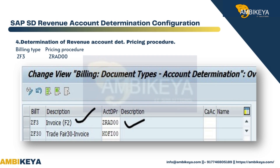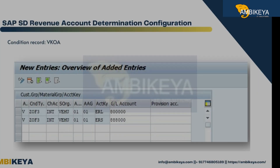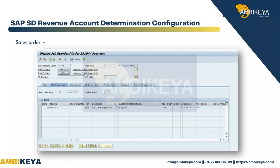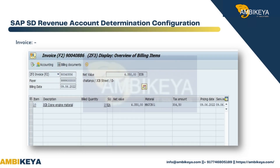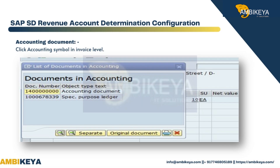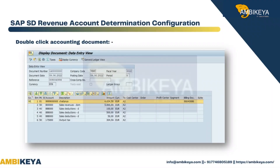Determination of revenue account determination pricing procedure: billing type ZF3 maps to pricing procedure ZRAD00. Condition record VKOA. Sales order, delivery, invoice — document flow. The accounting document is to be cleared after payment is made by the customer. To view the accounting document, click the accounting symbol at invoice level and double-click the accounting document.